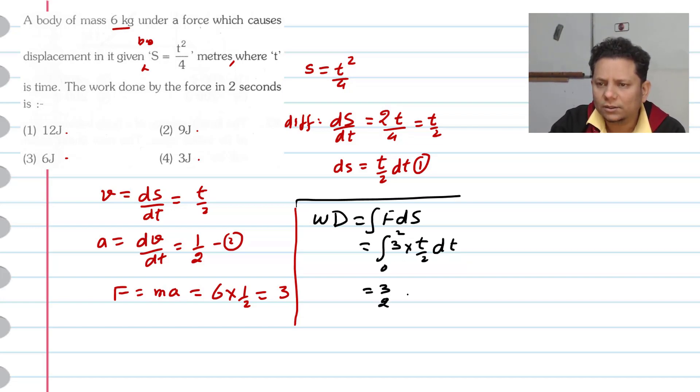This will be equal to 3/2 times integration of t dt with limits 0 to 2. Now, the integration of t dt we know is t squared by 2. So this will be equal to 3/2 multiplied by t squared by 2, with limits 0 to 2. When we put the values, this becomes 3/4 multiplied by the result with limits 0 to 2.